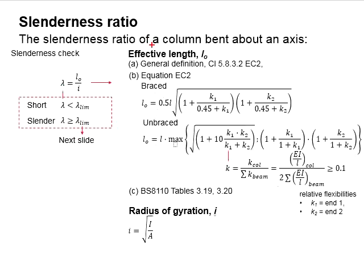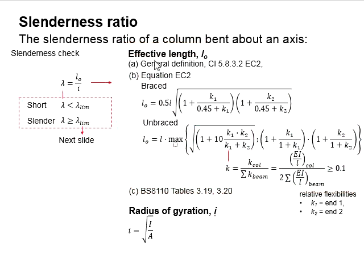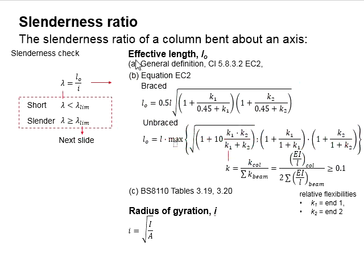Alternatively, the effective length may also be determined from equations. There are equations for braced structures and equations for unbraced structures. The equation for braced structures is more straightforward. k1 and k2 represent the relative flexibilities at end 1 and end 2.